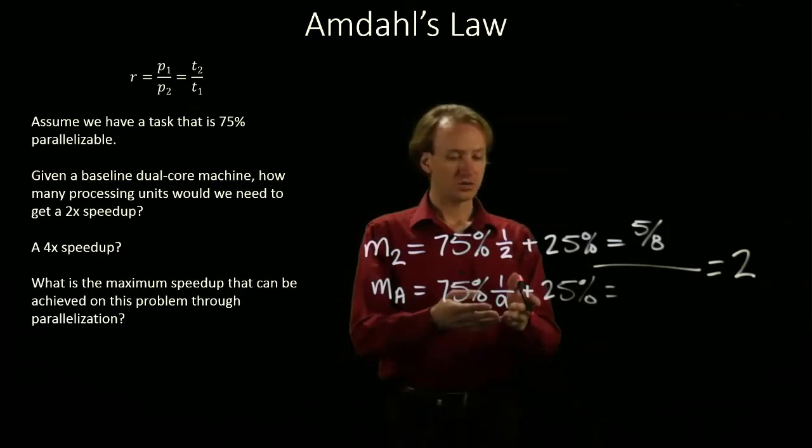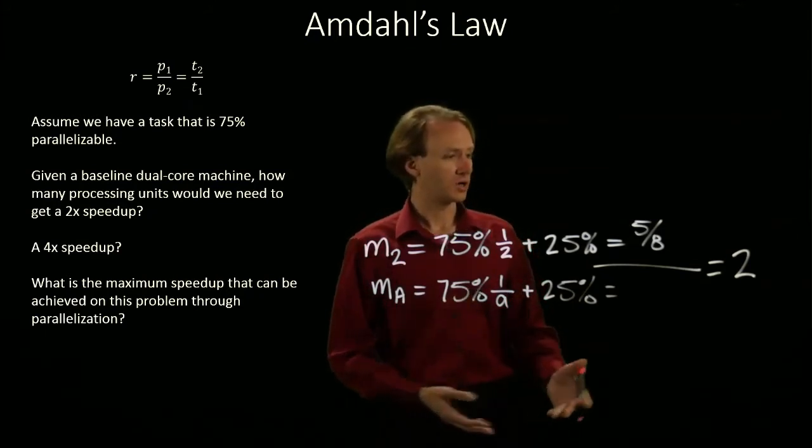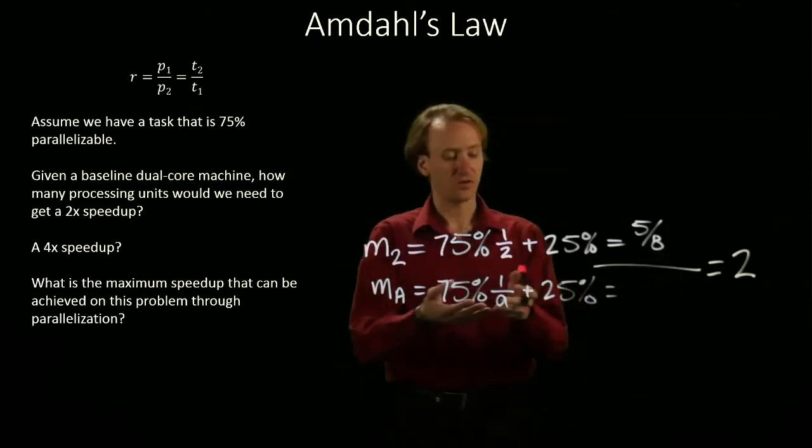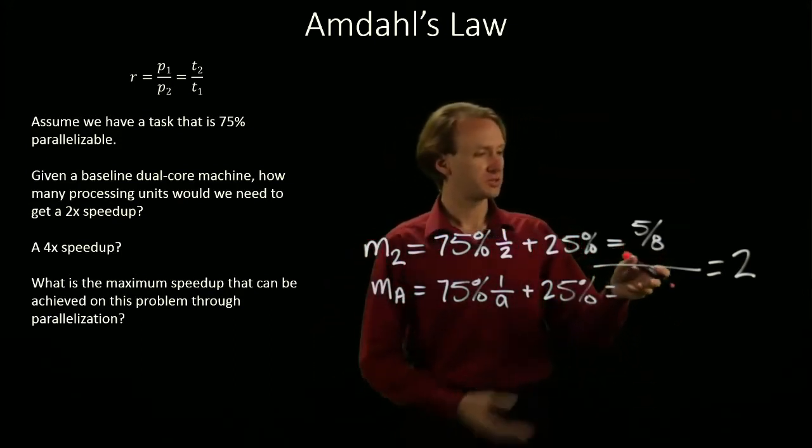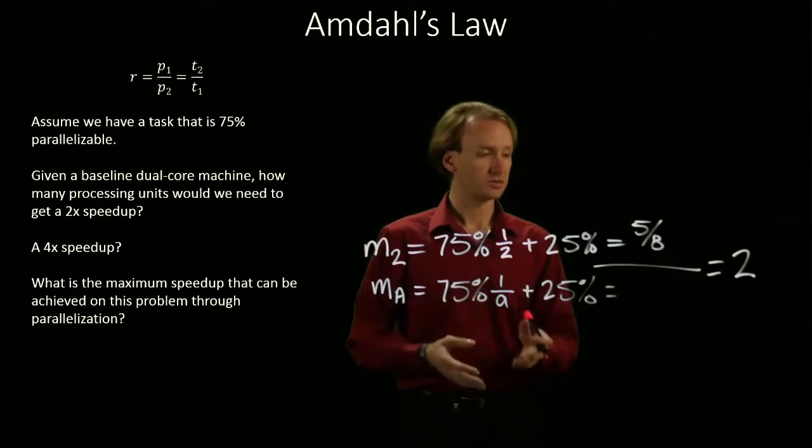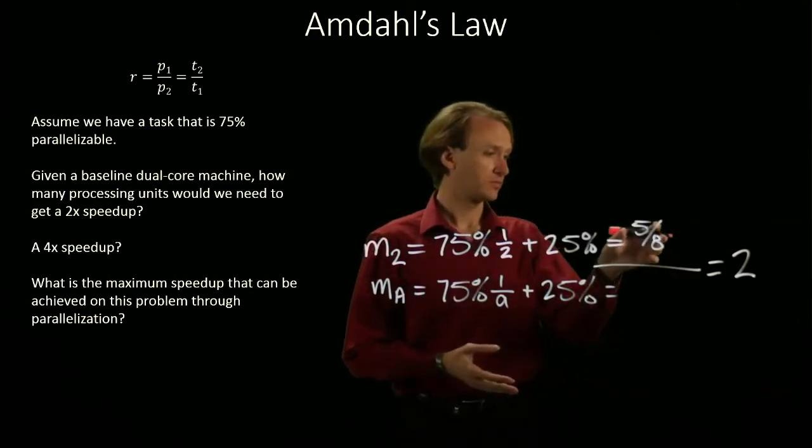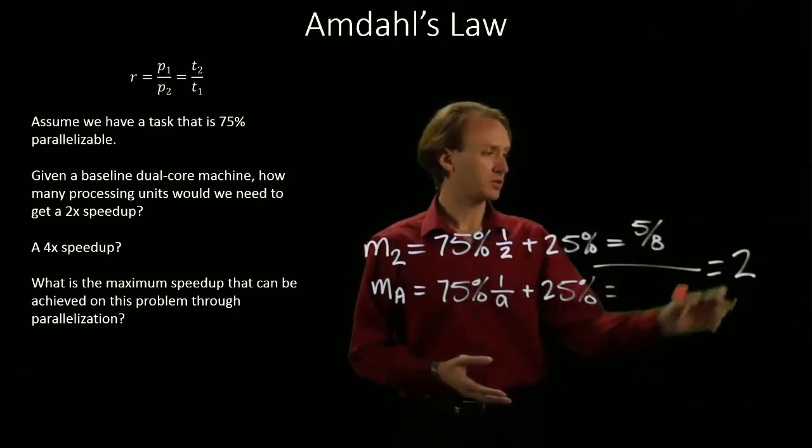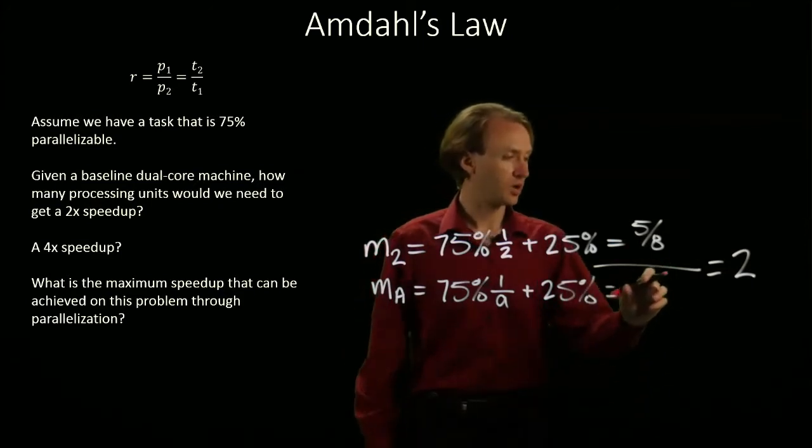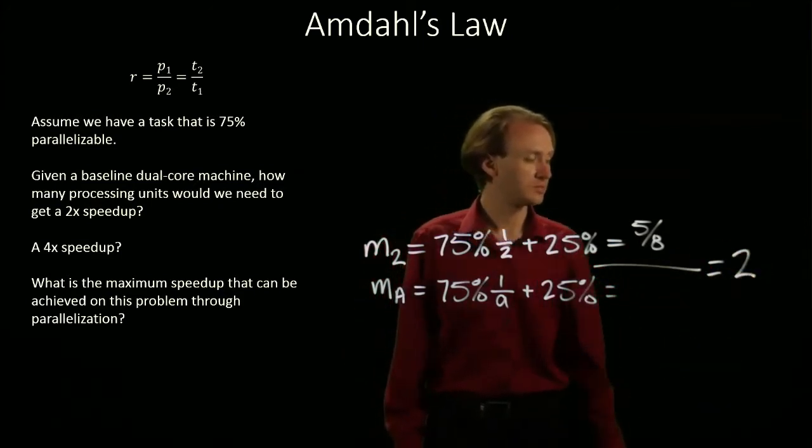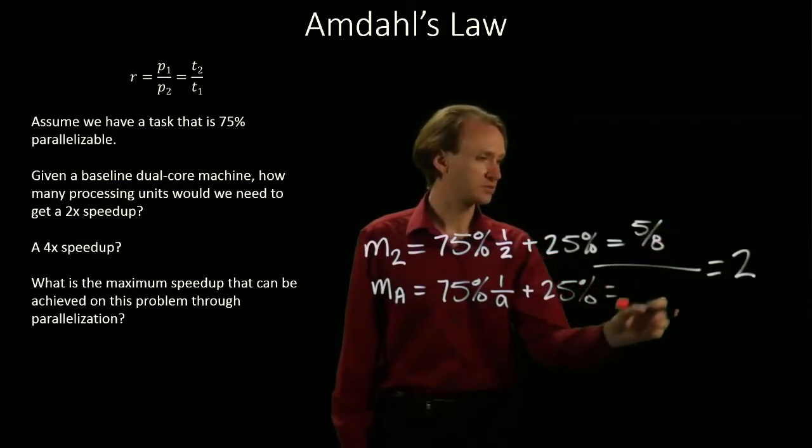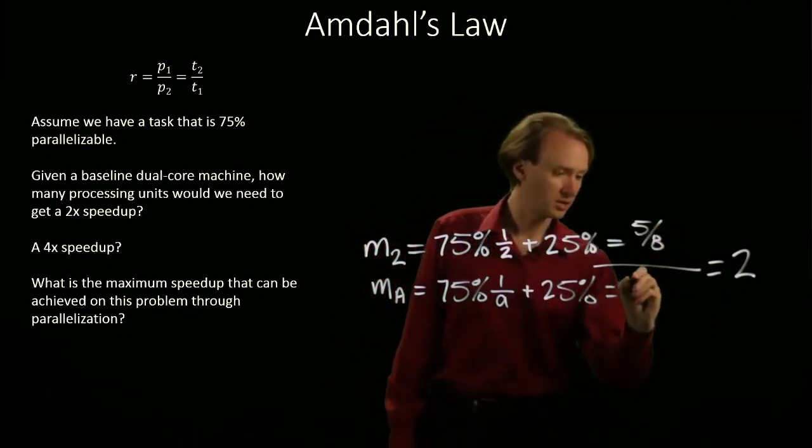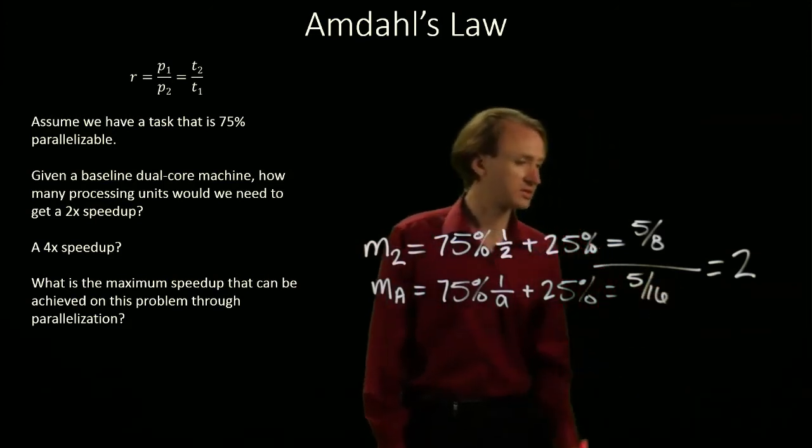So, I could now just start solving for A, or I can solve for this thing and then solve for A. It's probably easier to start by solving for this thing and then solve for A. So, I have 5 eighths divided by something equals 2. I really want to swap the something, the 2. So, I'll divide 5 eighths by 2.